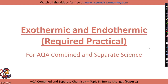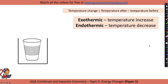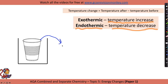Exothermic and endothermic required practical. With an exothermic reaction, heat is released into the surroundings, causing a temperature increase. With an endothermic reaction, heat is taken in from the surroundings, causing a temperature decrease. For this practical, rather than using a beaker, we use a plastic or polystyrene cup because it is a really good insulator — it reduces heat transfer so we can measure an accurate temperature change.